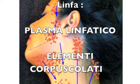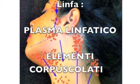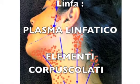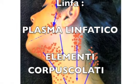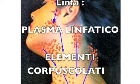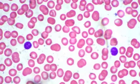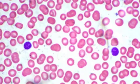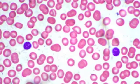Like blood, lymph is composed of two elements: lymphatic plasma, which is fluid, and corpusculate elements. The lymphatic plasma is very similar to blood plasma but with a reduced presence of proteins. The corpusculate elements are 90 percent leukocytes, and importantly include lymphocytes.